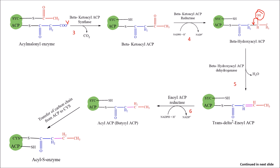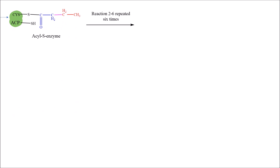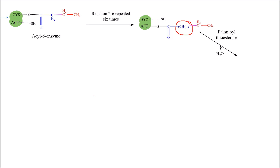The acyl-S-enzyme undergoes steps two through six repeatedly — this cycle is repeated six times, causing lengthening of the carbon chain. Initially we had only CH2, but after undergoing the series of reactions six times, the carbon chain is lengthened up to 13 carbon atoms.